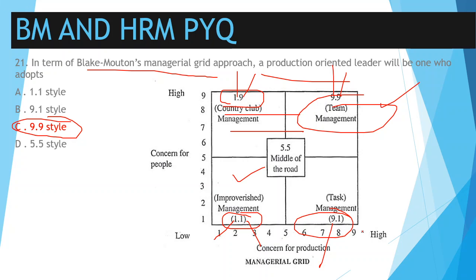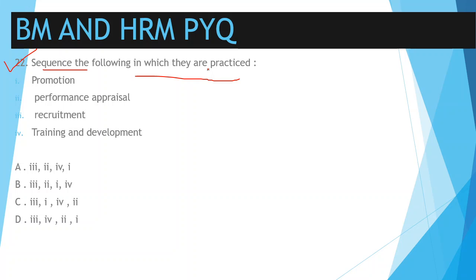Question number 22: sequence the following in which they are practiced. This is about the sequence of the staffing process. The first process is recruitment, then selection. Looking at the options, option number 3 appears first, so we need to see what comes next after recruitment. After recruitment comes selection — and we check which option follows logically.